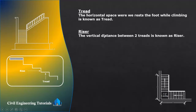Now what is a riser? The vertical distance between two treads is known as a riser. You can see here — this is the riser, the vertical distance between one tread and another tread. So between two treads we have one riser.